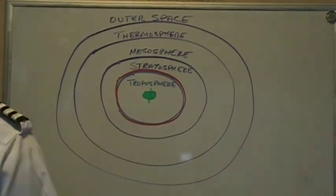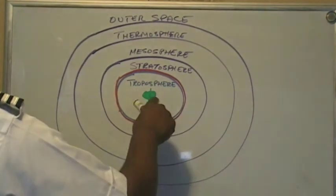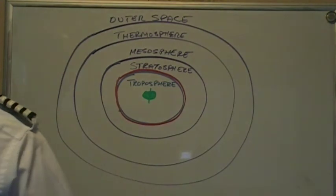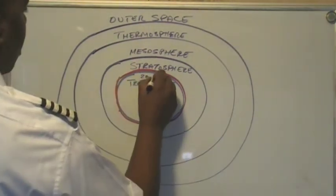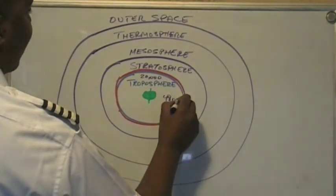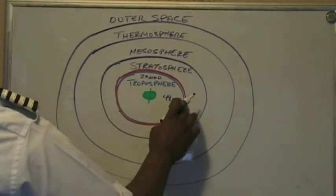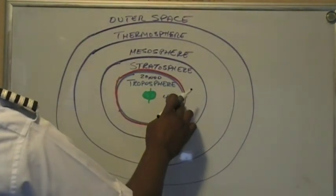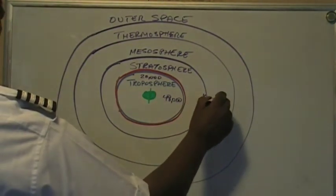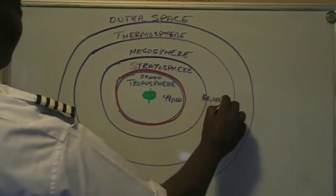Now let's talk about altitudes. In the troposphere, the polar regions can go as high as 20,000 feet and the equatorial regions as high as 48,000 feet. The stratosphere goes from 48,000 feet to 160,000 feet, and the mesosphere extends out to 280,000 feet.